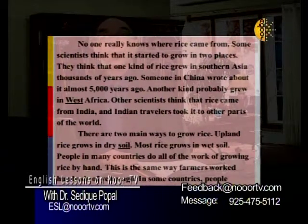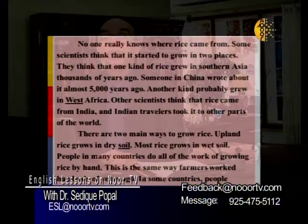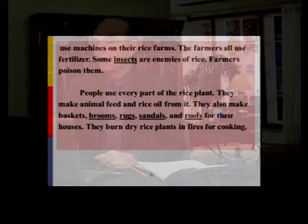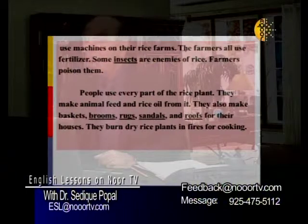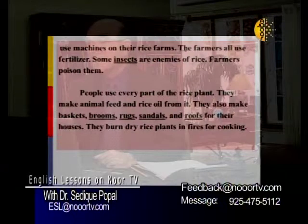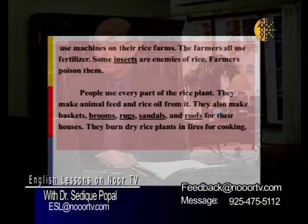There are two main ways to grow rice. Upland rice grows in dry soil; moose rice grows in wet soil. People in many countries do all of the work of growing rice by hand — the same way farmers worked hundreds of years ago. In some countries people use machines on their rice farms. The farmers all use fertilizers. Some insects are enemies of rice, and farmers poison them. People use every part of the rice plant: they make animal feed and rice oil from it. They also make baskets, brooms, rugs, sandals, and roofs for their houses. They burn dry rice plants in fires for cooking. So every part of rice is usable — that may be another reason why it's a very popular plant in Asia and in many parts of the world.